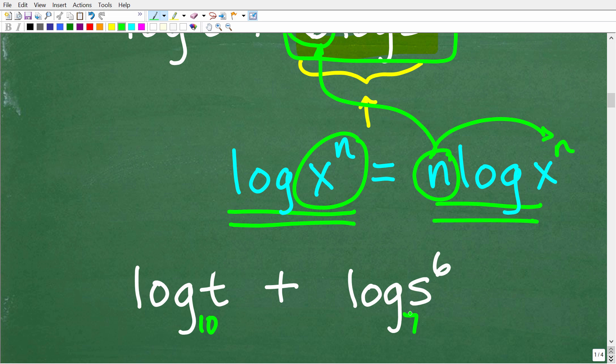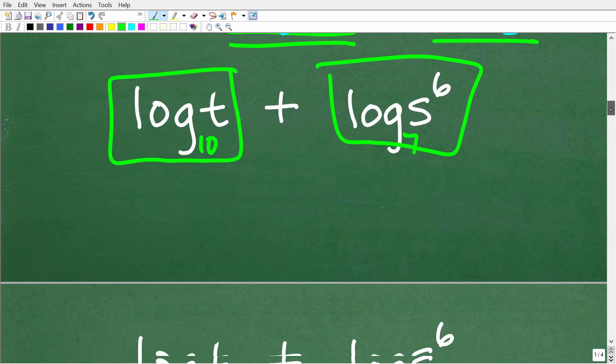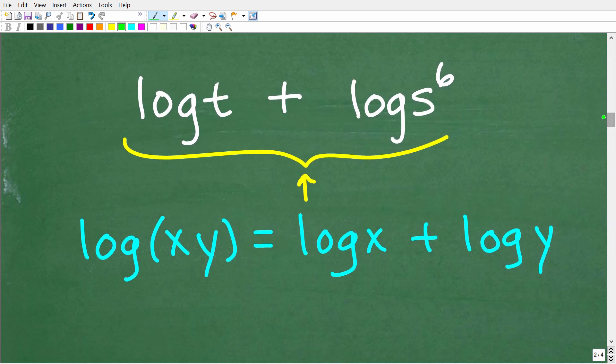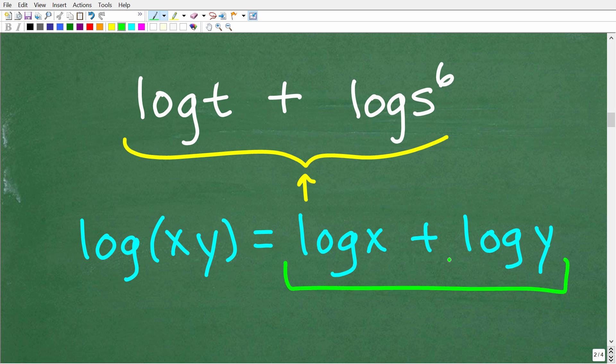Okay, so now we have a sum of two logarithms. So you need to be thinking about the product property. Okay, so log t plus log s to the 6 power. Well, again, anytime we are adding logarithms where the bases are the same, we need to be thinking about products. So log x times y is equal to log x plus log y.